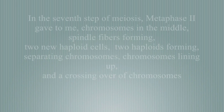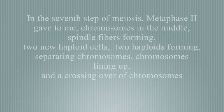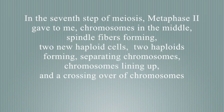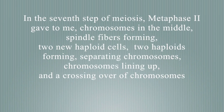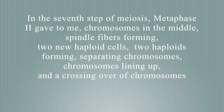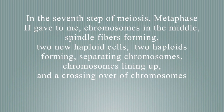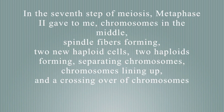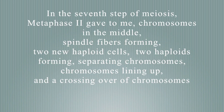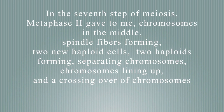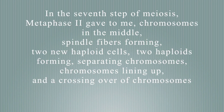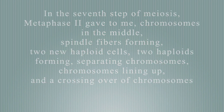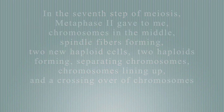In the seventh step of meiosis, where the phase 2 gave to me, chromosomes in the middle, spindle forming, two new haploid cells. Two haploids forming, separating chromosomes, chromosomes lining up, and a crossing over of chromosomes.